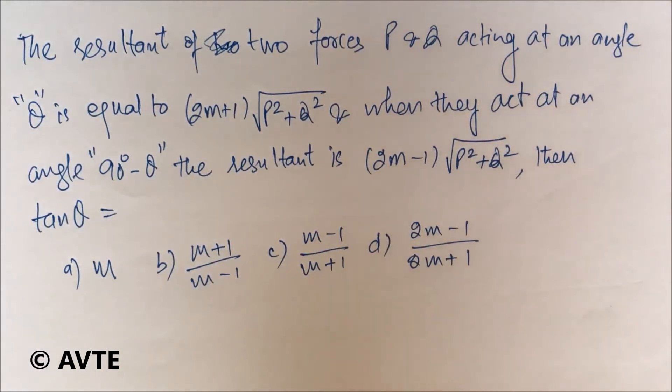You have to find the value of tan θ in terms of m. We'll use the basic formula: resultant squared equals F₁² + F₂² + 2F₁F₂ cos of the angle between them.